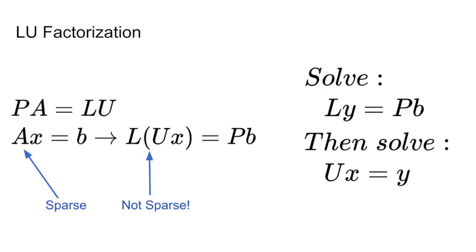The problem with LU factorization is that even though the matrix A can be sparse, its LU decomposition might result in non-sparse triangular matrices. This means that there are a lot more computations that are needed in order to solve the resulting equations.